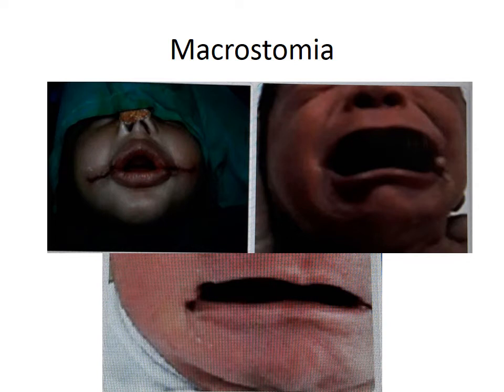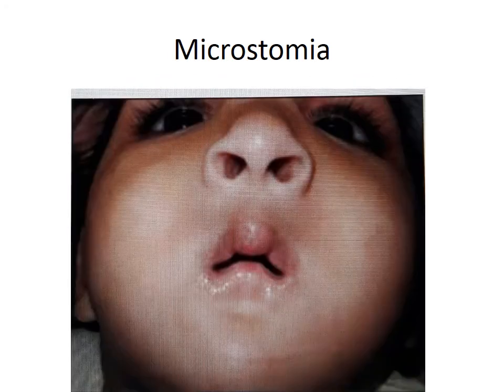Macrostomia is a very wide mouth. As seen in the picture, the baby's mouth is too wide; this condition requires surgical correction. The opposite condition is microstomia, where the mouth cavity is too small and also requires surgical correction.